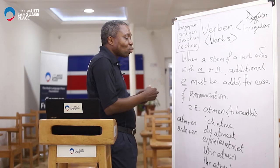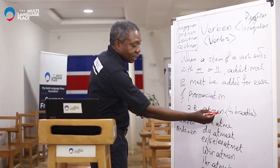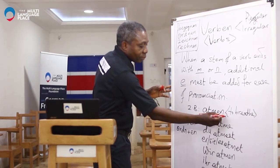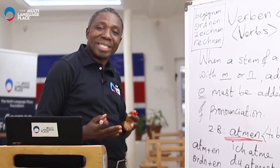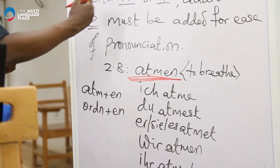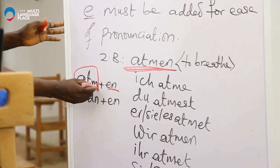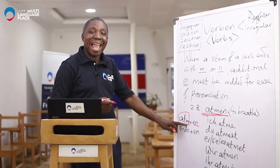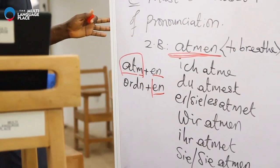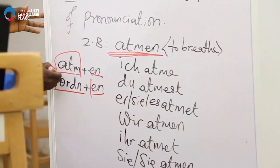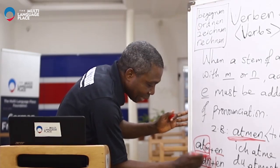When the stem of a verb ends with M, for example the verb 'atmen,' which means to breathe — this is the ending and this is the stem, so the stem is ending with M. And another verb, 'ordnen' — this is the ending and this is the stem. So the stem here is ending with M and the stem here is ending with N.